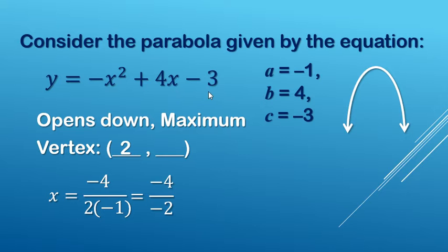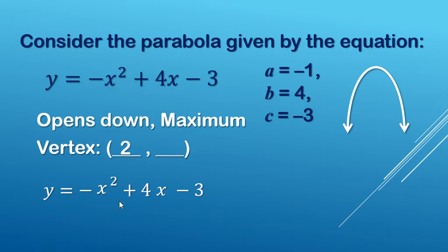To find the y, we're going to use our original equation. Instead of the x's, we're going to replace those with what x equals on the vertex, and that's 2. So negative 2 squared is negative 4, 4 times 2 is 8, minus 3. Then continue simplifying: 8 minus 4 minus 3 makes a positive 1. So our value for the vertex is 2 comma 1.